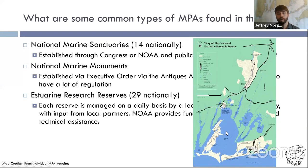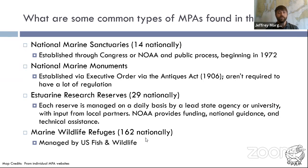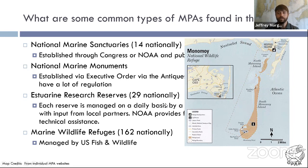That research reserve is really beautiful and set aside to do research on how climate change and sea level rise are impacting the Cape Cod coastline, but also for everyone to be able to enjoy. If this parcel of land were not put aside for protection, it would probably be very wealthy homes. And then we have marine wildlife refuges, commonly protected for migratory species like birds. A big example on the Cape is Monomoy National Wildlife Refuge — if you haven't been there, it's a great spot, with horseshoe crabs and beautiful birds this time of year.